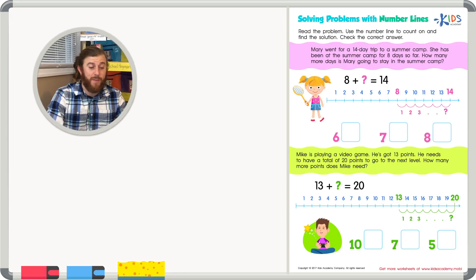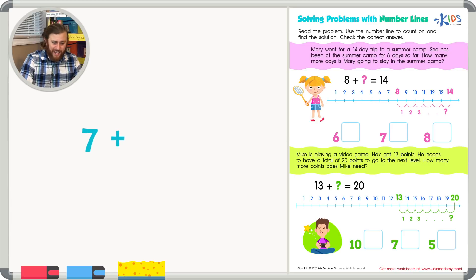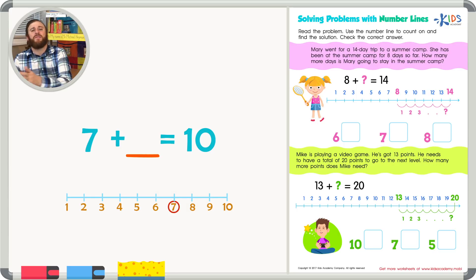let's say we were trying to solve the problem 7 plus blank equals 10. How do we know what goes in the blank? Well, we can use a number line. Let's set up our number line from 1 to 10. If we started at 7, how many numbers do we have to count on to get till 10? Well, let's count together.